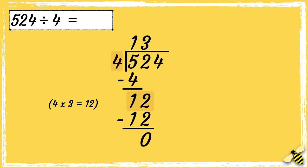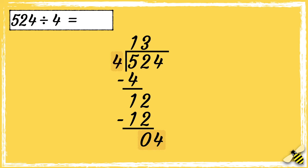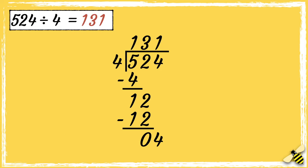We can now bring the third digit down. Finally, how many 4s go into 4? 4 goes into 4 once. So the answer is 131.